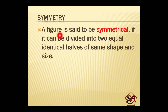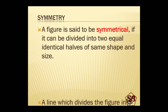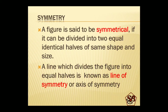A figure is said to be symmetrical if it can be divided into two equal identical halves of the same shape and size. A line which divides the figure into equal halves is known as the line of symmetry or axis of symmetry.